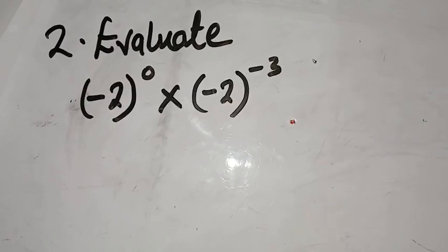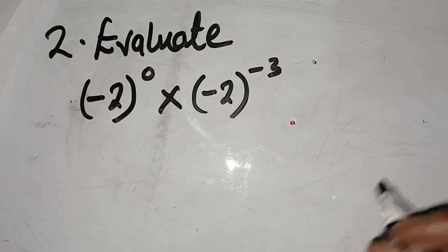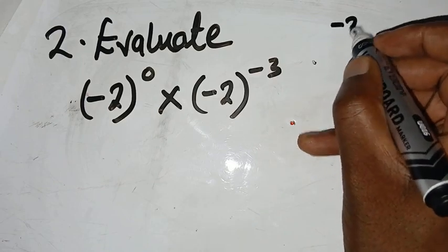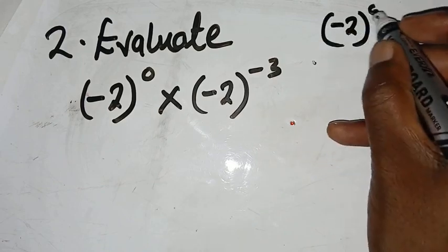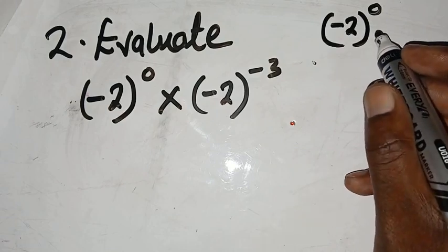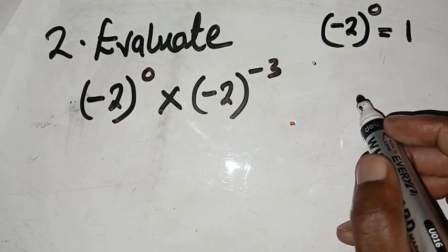Okay, so this is question two. Let's see how we can proceed to simplify this one. We could split this into two parts. You do know that any base raised to zero is equal to 1, so that part is going to give us 1.